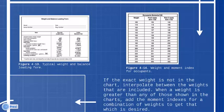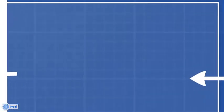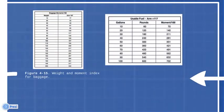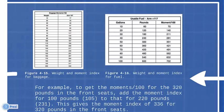If the exact weight is not in the chart, interpolate between the weights that are included. When a weight is greater than any of those shown, add the moment indexes for a combination of weights to get that which is desired. For example, to get the moment divided by 100 for 320 pounds in the front seats, add the moment index for 100 pounds to that for 220 pounds.